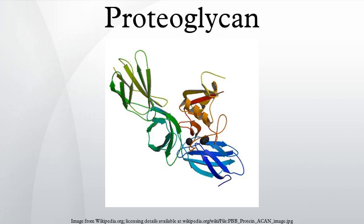Proteoglycans occur in the connective tissue and are categorized by their relative size and the nature of their glycosaminoglycan chains. Certain members are considered part of the small leucine-rich proteoglycan family. These include decorin, biglycan, fibromodulin, and lumican.